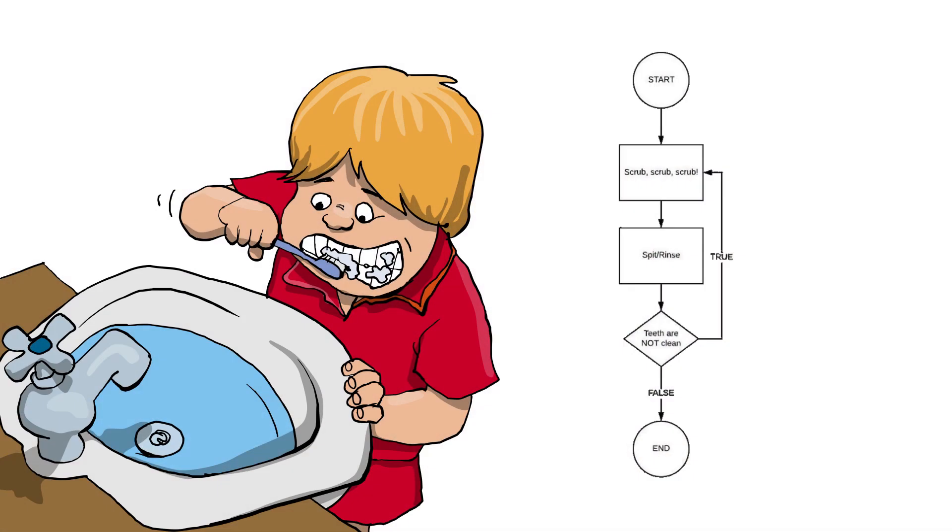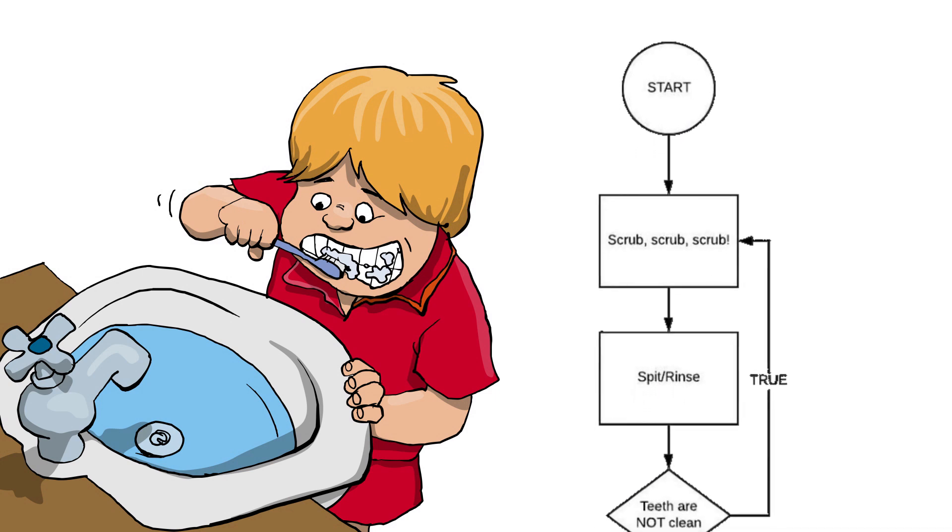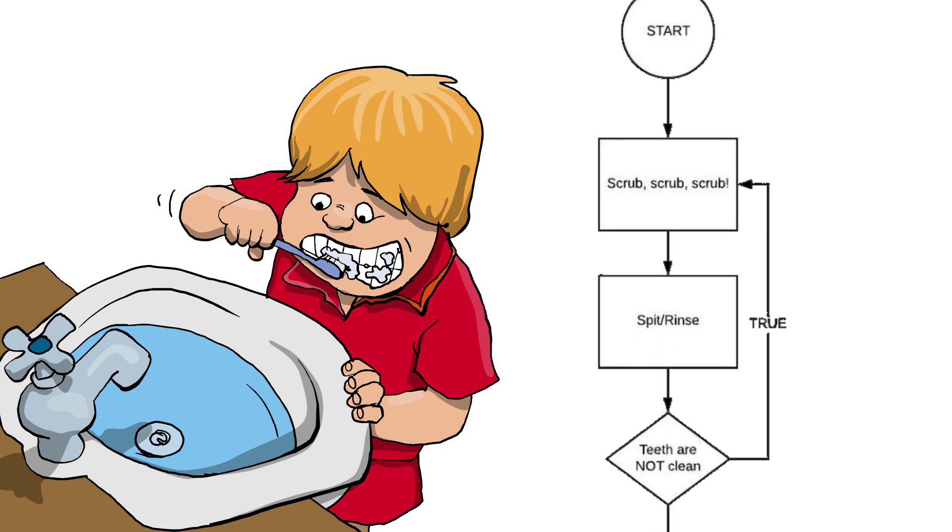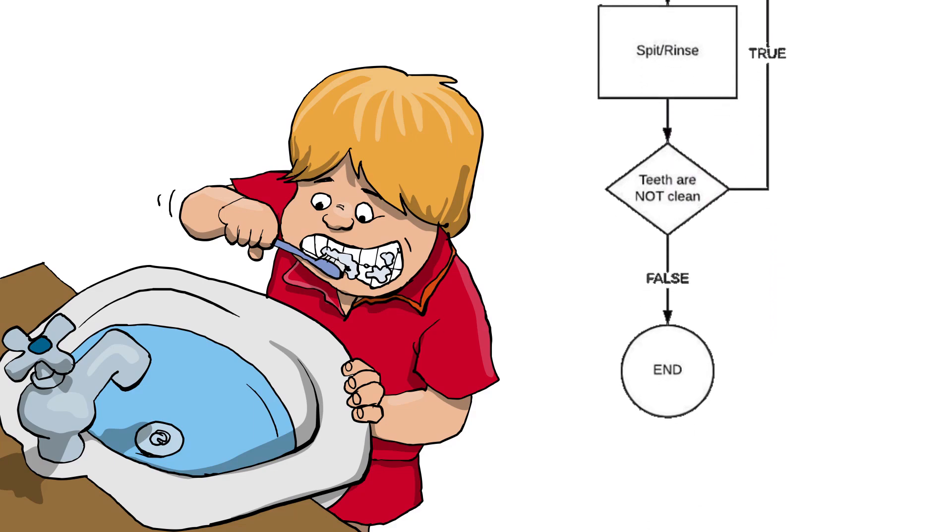If we made a flow chart for the tooth brushing process, it would look like this. We start with our toothbrush. Scrub, scrub, spit out the toothpaste, and then take a good look at our teeth. If they're not clean, we go back and we start the process over again. If they are, we exit the process and we stop.